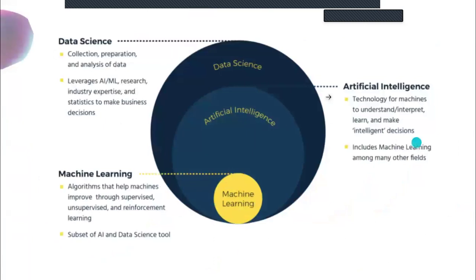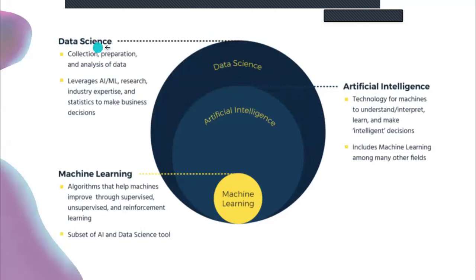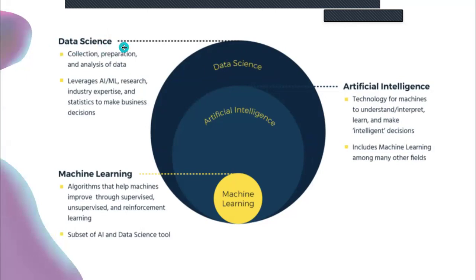Data science is the overarching field or discipline when it comes to data. When you're talking about data analysis, machine learning, AI — data science is the umbrella above all of these things. Artificial intelligence, as it stands today, is a subset of data science. As at today, AI is data-focused — essentially any form of technology that allows machines to make decisions.